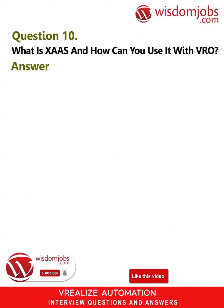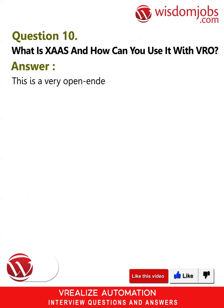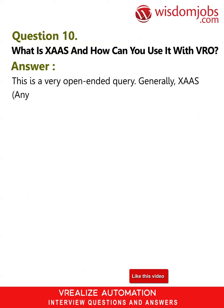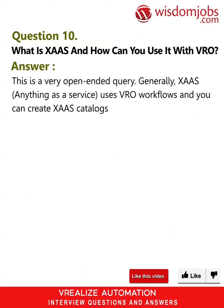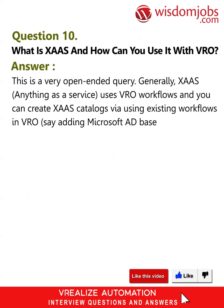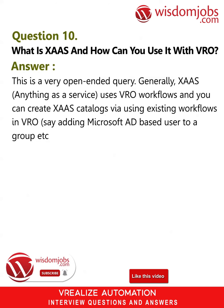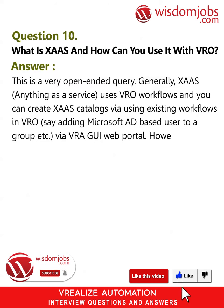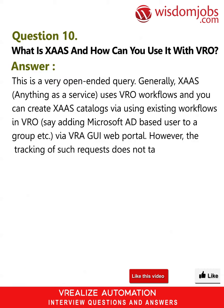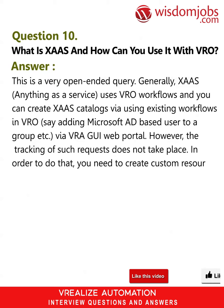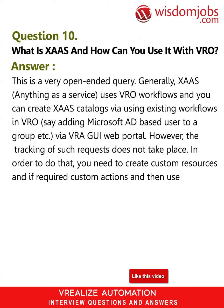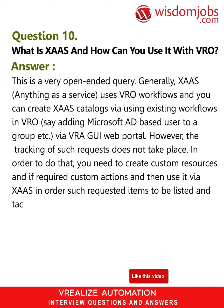Question 10: What is XaaS and how can you use it with VRA? Answer: This is a very open-ended query. Generally, XaaS — anything as a service — uses VRA workflows. You can create XaaS catalogs by using existing workflows in VRA, such as adding a Microsoft AD-based user to a group via the VRA GUI web portal. However, the tracking of such requests does not take place automatically. To do that, you need to create custom resources and, if required, custom actions, then use it via XaaS in order for requested items to be listed and tagged in request items.